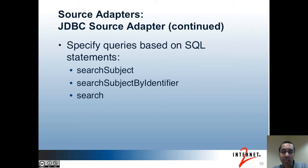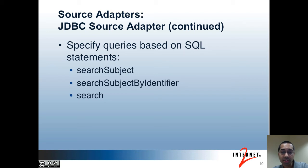For this source adapter, next you specify a few queries that Grouper can run to find subjects. Grouper internally stores the subject ID for subjects. The first query allows Grouper to find a subject in the source based off of the subject ID. The second query allows Grouper to find a subject by another identifier — for instance, when users authenticate to the Grouper UI, the remote user value is assumed to be either a subject ID or one of the subject's identifiers. Finally, the last query is to perform a search, which may include a substring search on the source attribute that contains subject names, and should probably include the ID and identifiers as well. In the Grouper UI, when you perform a subject search to find a person to add to your group, this query would get used.